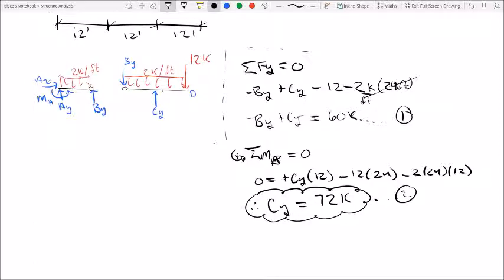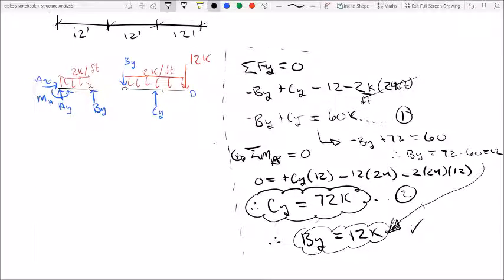That was our second equation. If we go back up to our first equation, we said that CY minus BY equals 60, so therefore BY must be equal to 12 kip. So minus BY plus 72 equals 60, therefore BY is equal to 72 minus 60 equals 12.